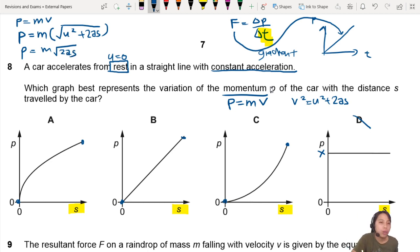From there, we can conclude. Therefore, the relationship between P and S. P is proportional to the square root of S. Square root graphs generally look like this. This is the answer.